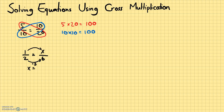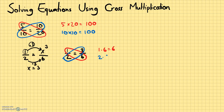You do the same thing to the numerator to find x — multiply by 3. The numerator is 1, multiply by 3, so x has to be 3. You can check by cross multiplication: 1 times 6 equals 6, and 2 times 3 also equals 6. So x equals 3 is correct.